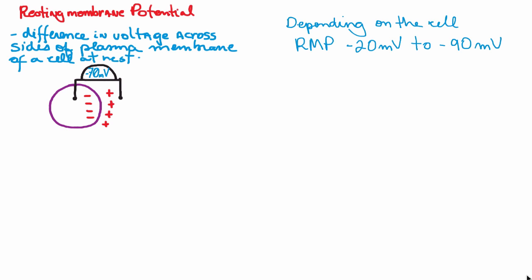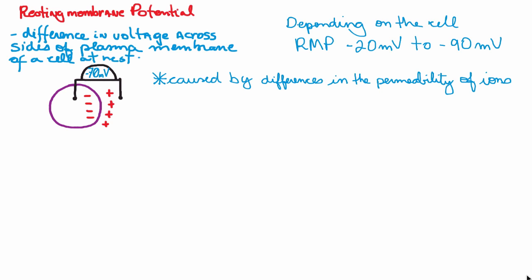If you have more cations on one side than the other, the degree of positivity of that cell would create this difference in voltage. The resting membrane potential is established because of differences in the permeability of the ions. Your plasma membrane has a certain permeability for each ion - a certain permeability for potassium ions, a certain permeability for sodium ions, and so on.